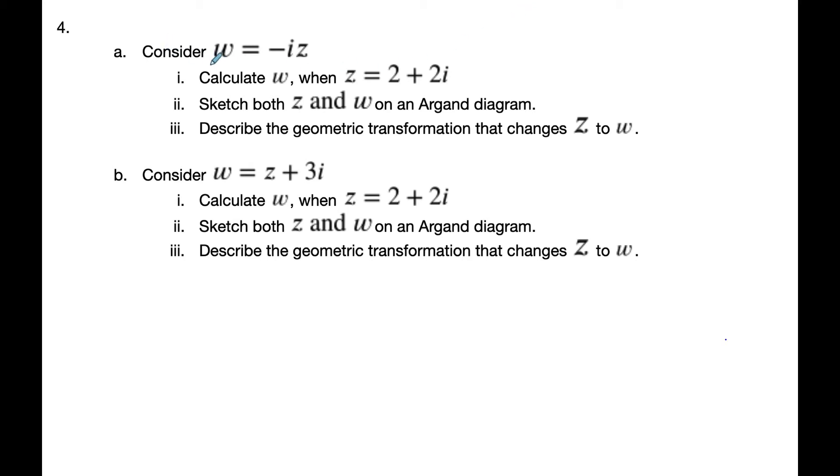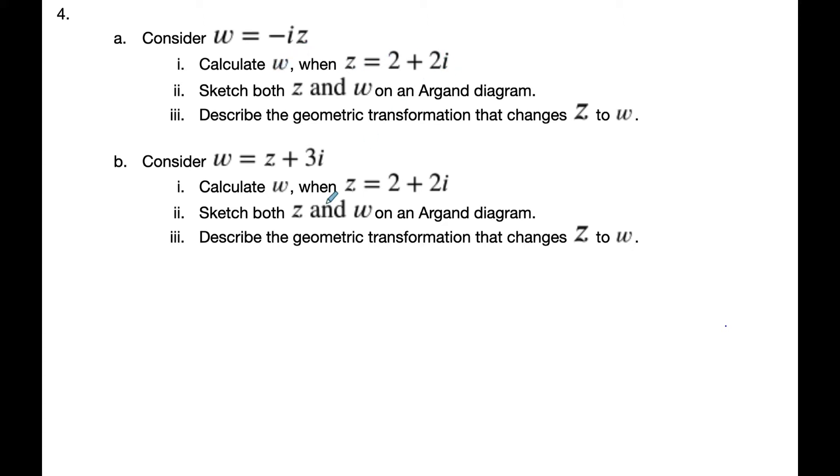Okay, Mr. Rops here. So we're going to consider w is negative i times z, and I want to calculate w when z is 2 plus 2i.